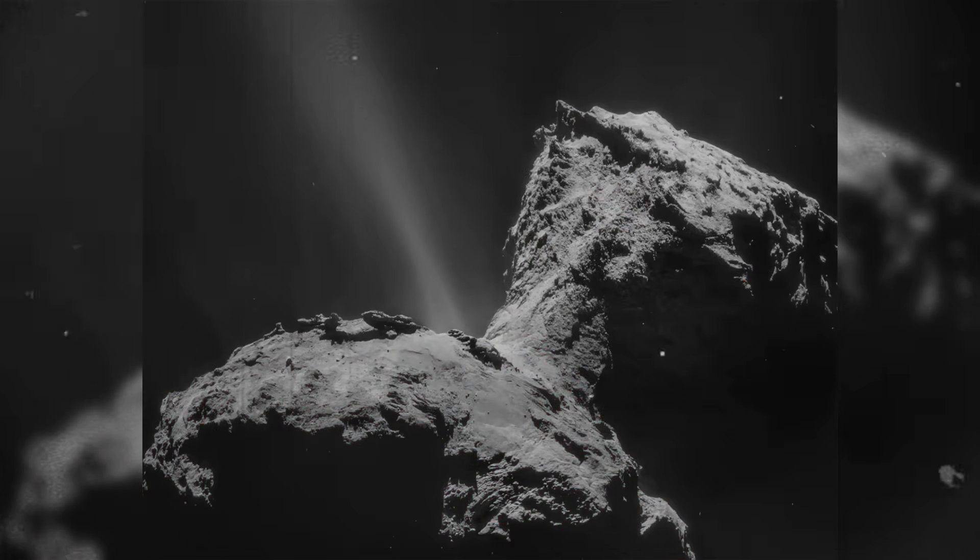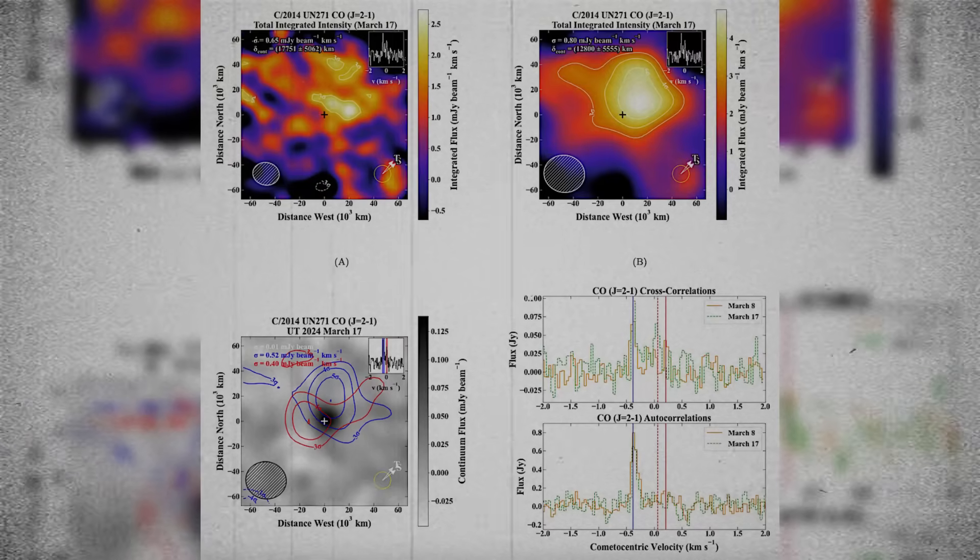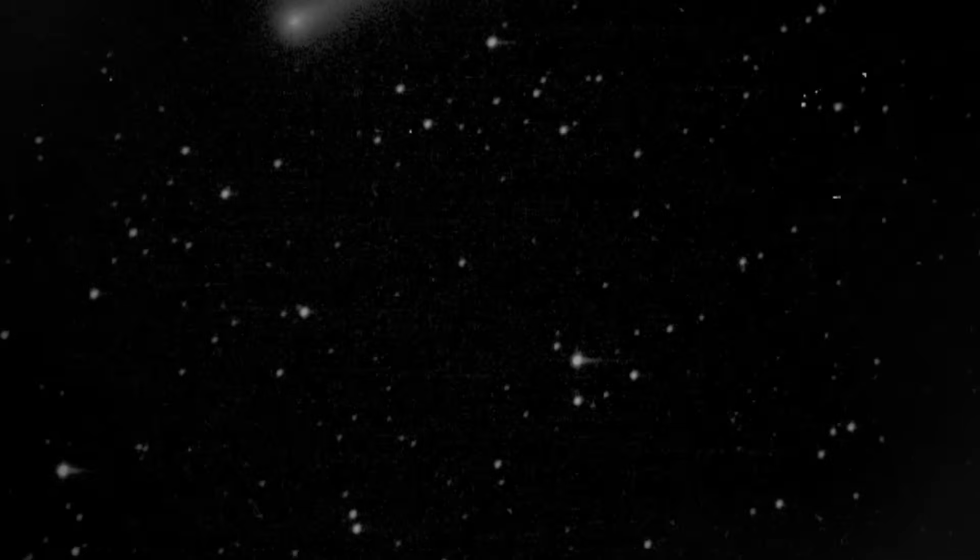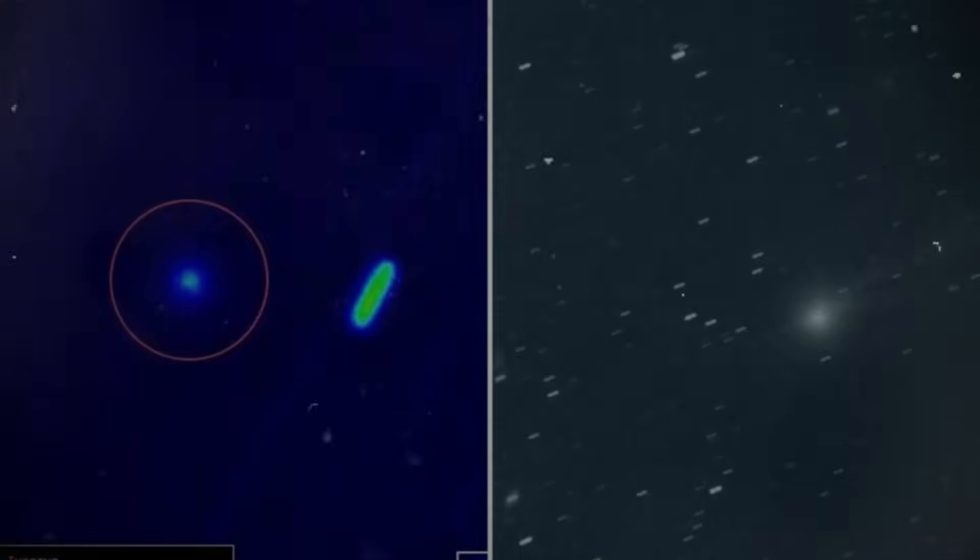This theory aligns with the new thermal arc discovered along the equator. As the internal pressure redistributes, new vents may open or old ones may widen, contributing to the slow, steady halo. What makes this phenomenon significant is its scale. For an object as massive as UN271, even mild venting represents a powerful release of energy. Over time, this could subtly adjust its trajectory or alter its rotation. For now, the changes are small, but they confirm one thing clearly. UN271 is not a static traveler. It is a dynamic body interacting with its environment long before models predicted any activity.